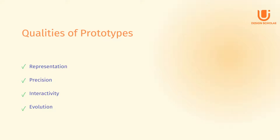Prototypes have four main qualities. First is representation, the prototype itself. Second is precision, the fidelity of the prototype, meaning its level of detail — low fidelity or high fidelity. Next is interactivity, the functionality open to the user — for example, fully functional, partially functional, or view only.